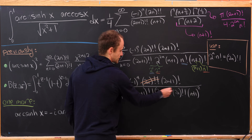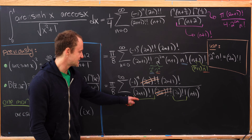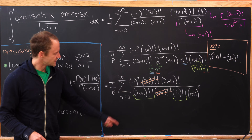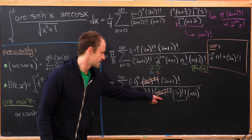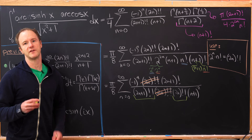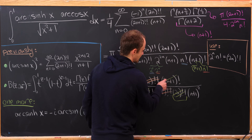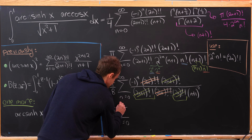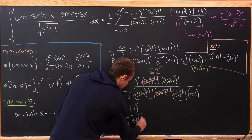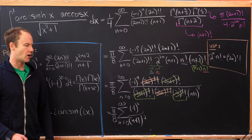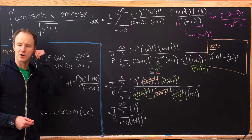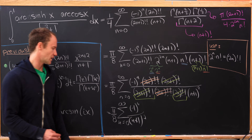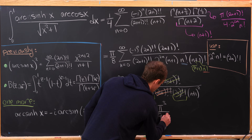Now we start canceling. The (2n)!! in the numerator cancels one (2n)!! below. Then fusing (2n+1)!! with the remaining (2n)!! gives (2n+1)!, which cancels the (2n+1)! in the numerator. What remains is pi over 8 times the sum as n goes from 0 to infinity of minus 1 to the n over (n+1) squared. This is an alternating version of the Basel problem, with value pi squared over 12.